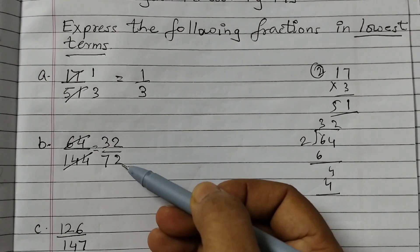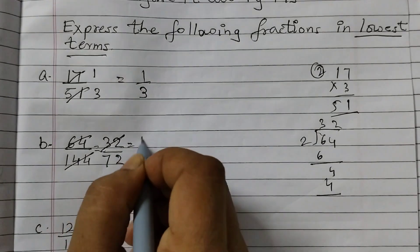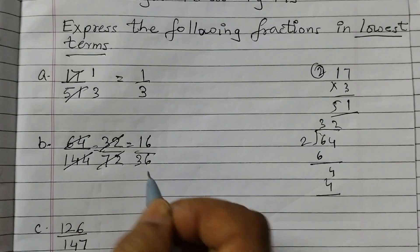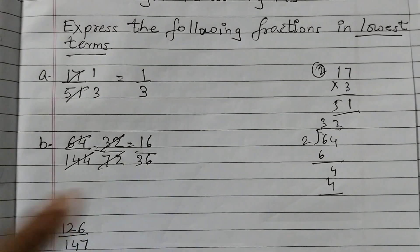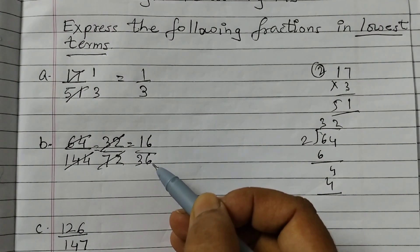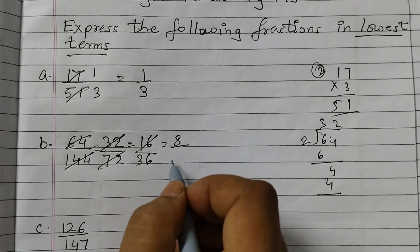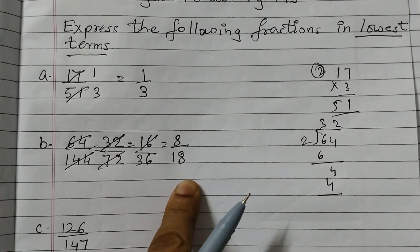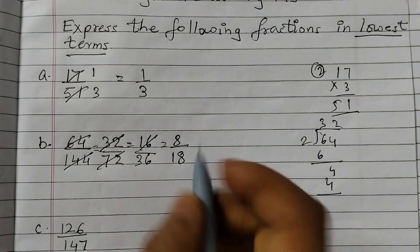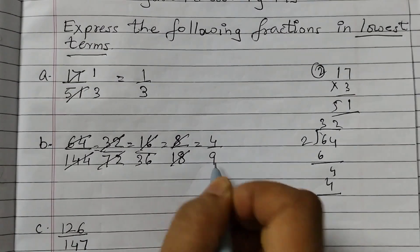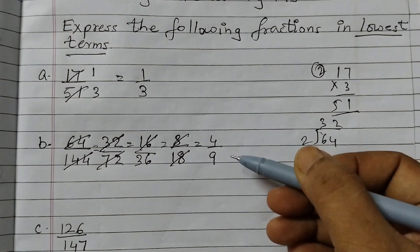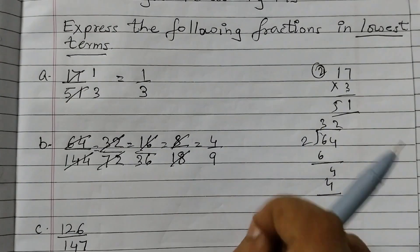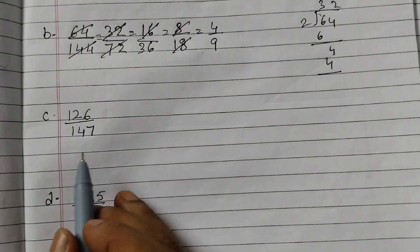We have 16 upon 36 — both even numbers, so divisible by 2 again. 2 eights are 16, 2 eighteens are 36, giving 8 upon 18. These are still even numbers, so divide by 2 again: 2 fours are 8, 2 nines are 18, giving 4 upon 9. Now 4 and 9 share no common table, so the only common factor is 1. This fraction is in its simplest form.